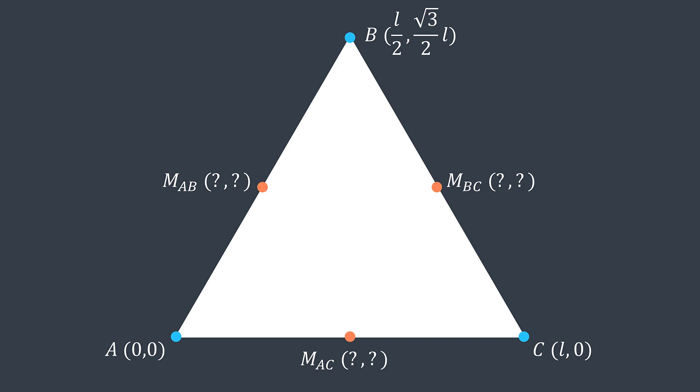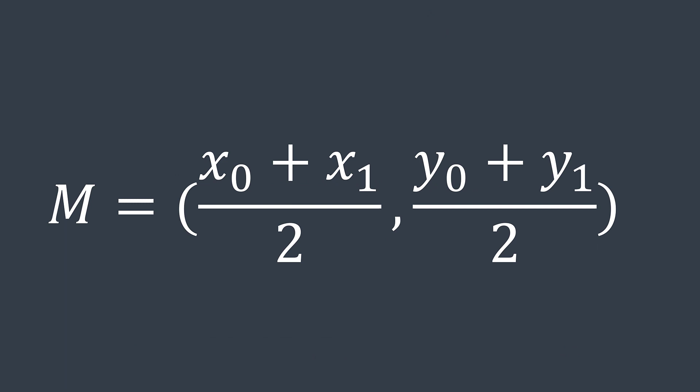The general rule to get the midpoint between two points x zero y zero and x one y one is x one plus x zero divided by two, y one plus y zero divided by two.